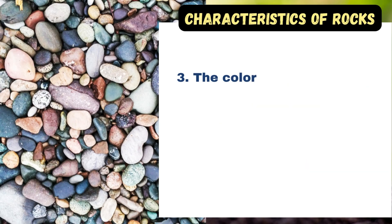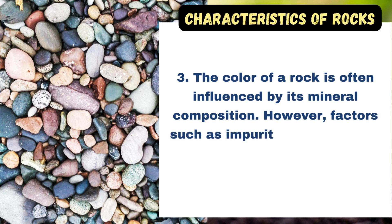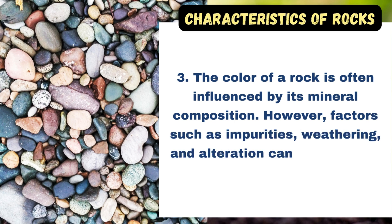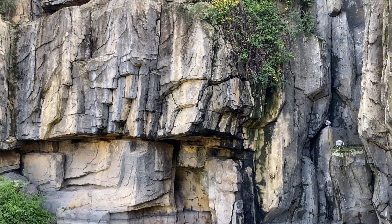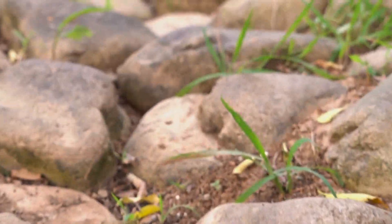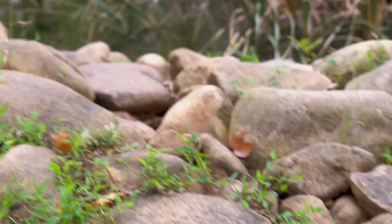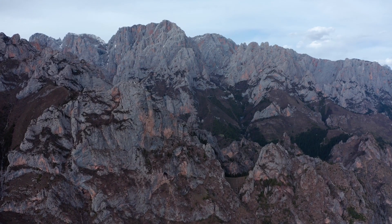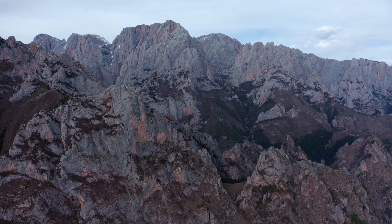The color of a rock is often influenced by its mineral composition. However, factors such as impurities, weathering, and alteration can also affect a rock's color. Rocks play a fundamental role in Earth's geological processes and are integral to the rock cycle, where rocks undergo transformation through processes like weathering, erosion, and lithification.